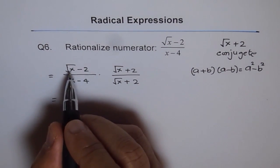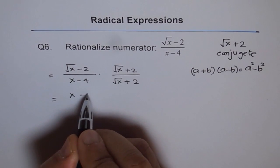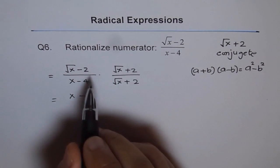So it becomes square of square root x, which is x, and square of 2 is minus 4. Minus b square. So this is what happens in the numerator.